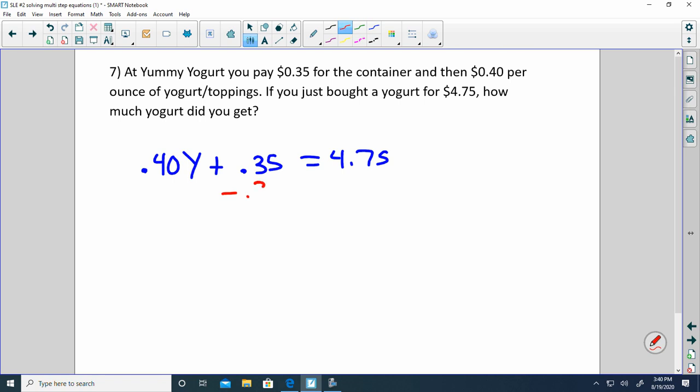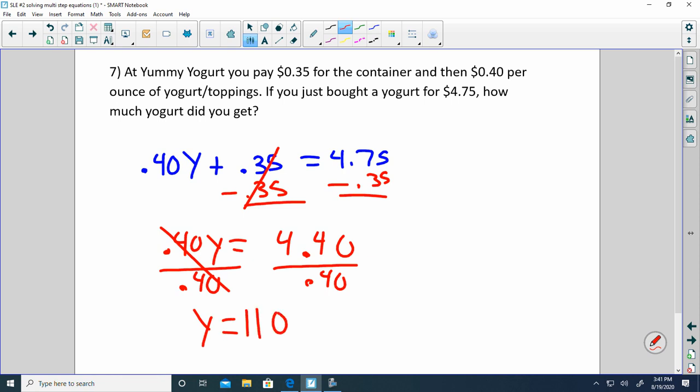Let's subtract the 0.35 from both sides. Make sure you line up the decimals. Those cancel. 0.40 Y is equal to 5 minus 5 is 0, 7 minus 3 is 4. Decimal comes straight down. And 4.40. Divide each side by 0.40. If you have a little handheld calculator, you do that. But you should come up with an answer of 11. So we bought 11 ounces of yogurt and toppings.